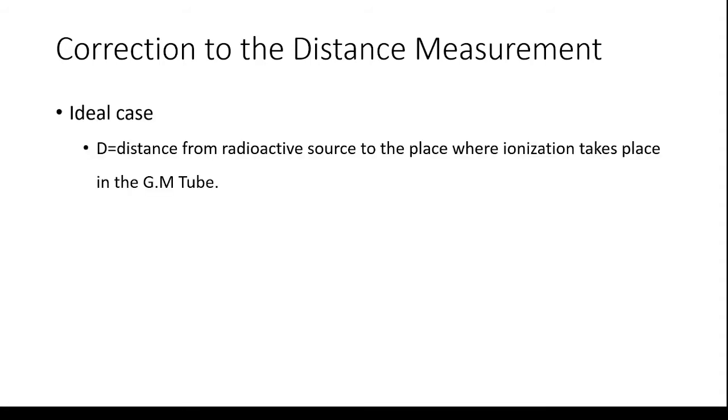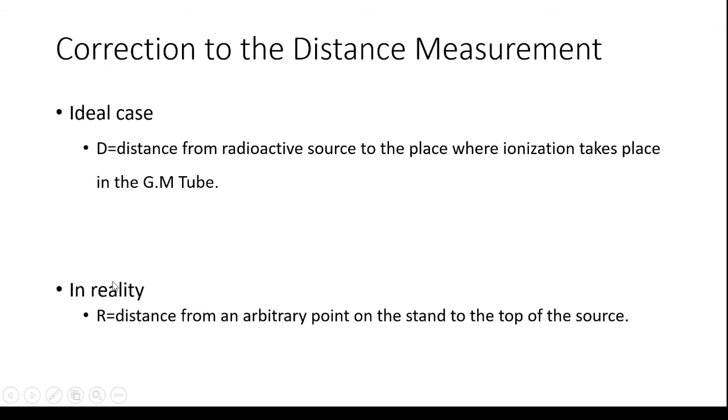Now the important thing is we have to make a correction for the distance measurement. In our ideal case, this D which you have measured is the distance from the radioactive source, the place where the ionization takes place in the GM tube. But in reality, the R which you are measuring is the distance from an arbitrary point on the stand to the top of the source as I have demonstrated in the diagram earlier.